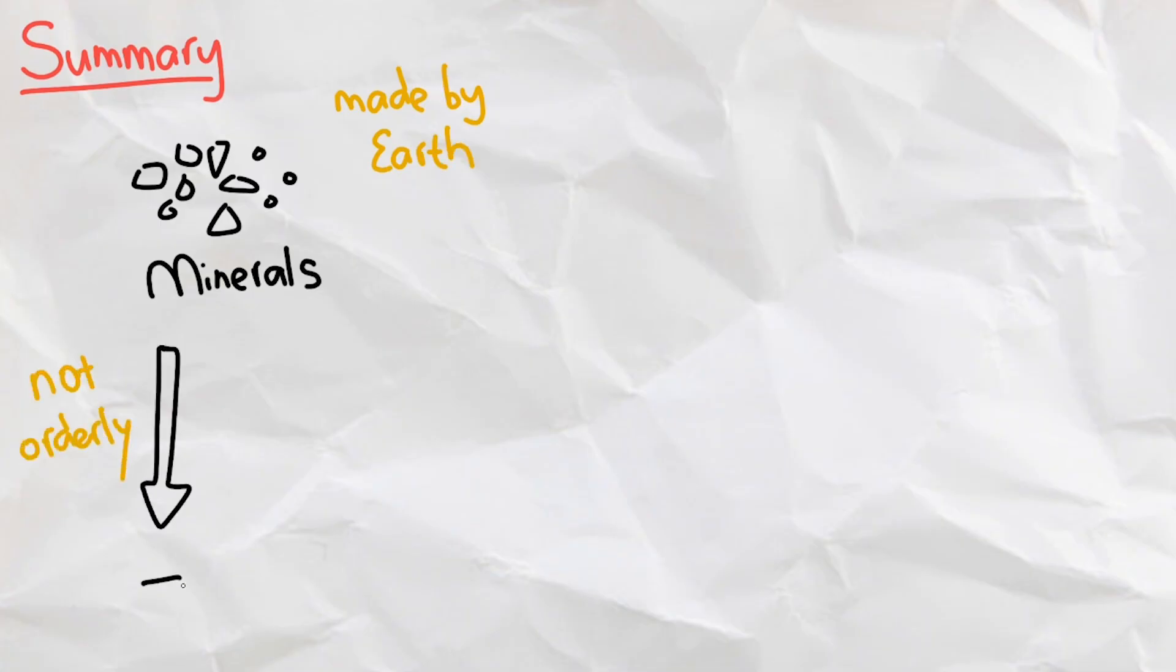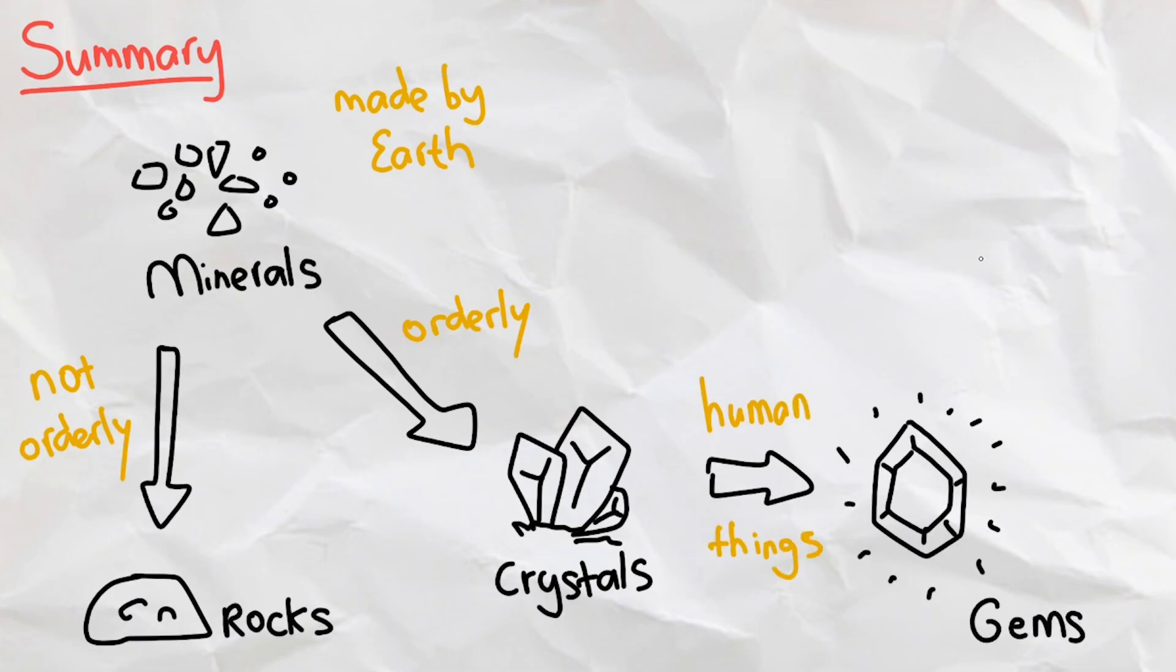And there we have it! Minerals are orderly inorganic compounds made by earth, which make up rocks and crystals. Crystals also have this orderly structure, and they are refined into pretty gems by human activity.